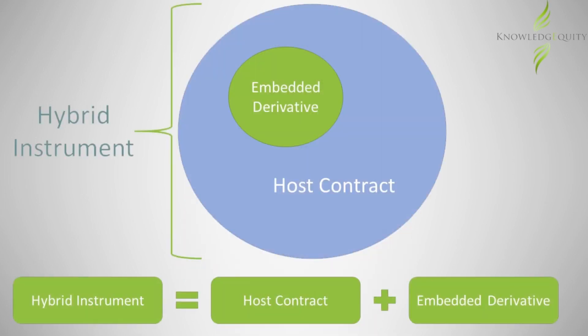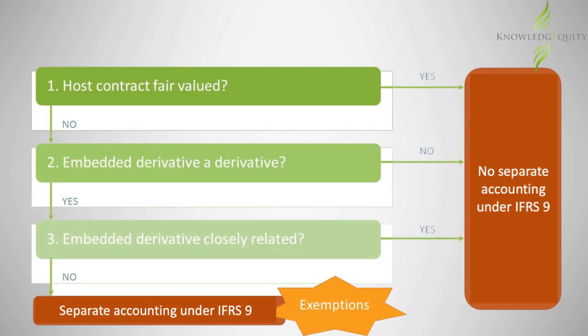To recap, embedded derivatives are simply derivatives that are included within the host contract, together forming a hybrid instrument. Embedded derivatives can change the characteristics and risks of the host contract, and this information is important to users of financial statements. There are a number of steps to determine whether such embedded derivatives should be separately accounted for in the financial statements. The end result is that they are fair valued to profit and loss, whether separately or as part of the hybrid instrument.